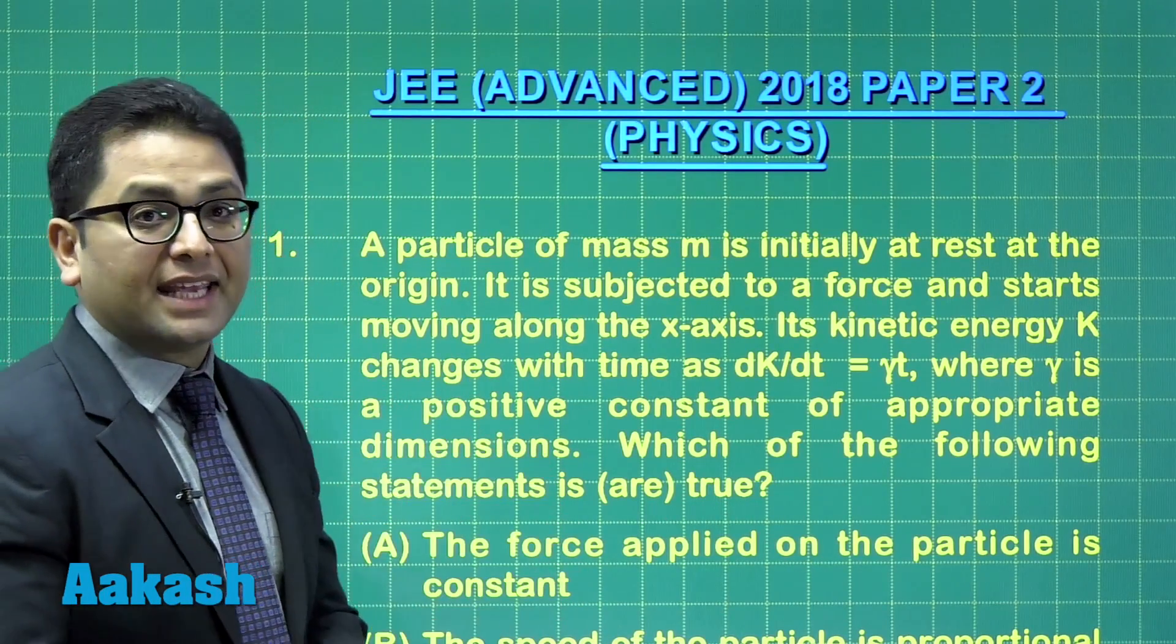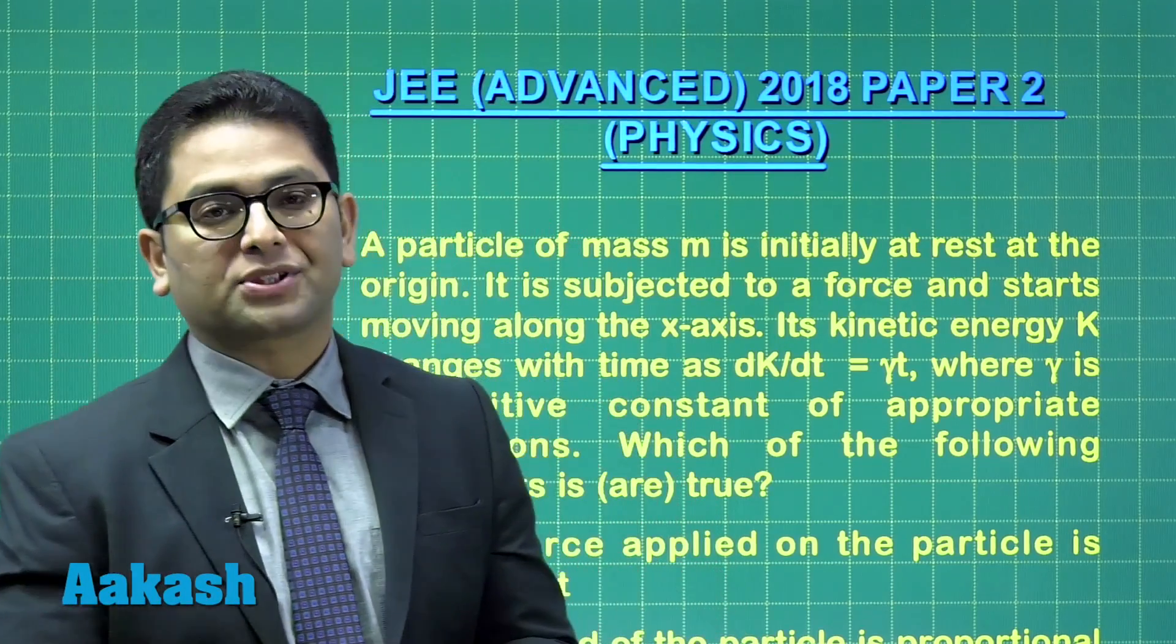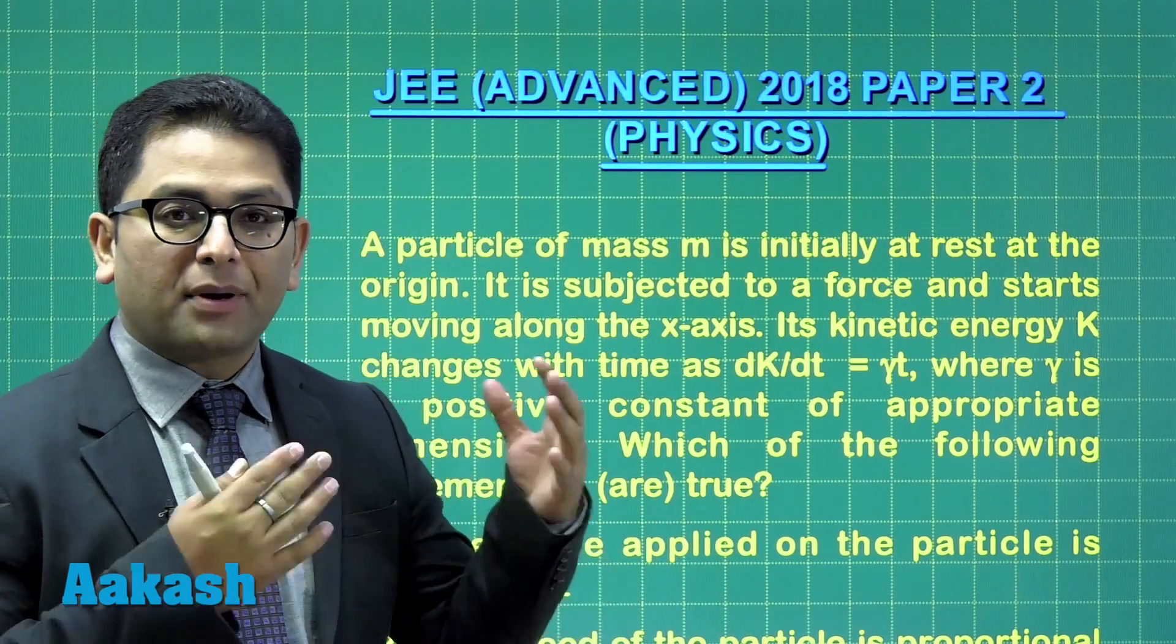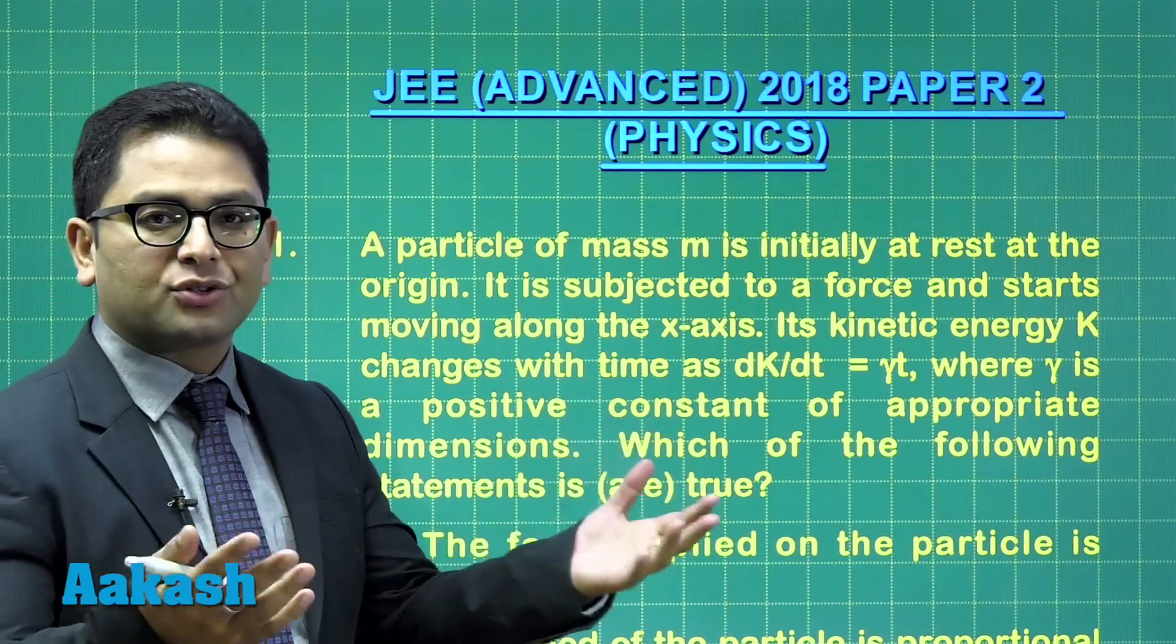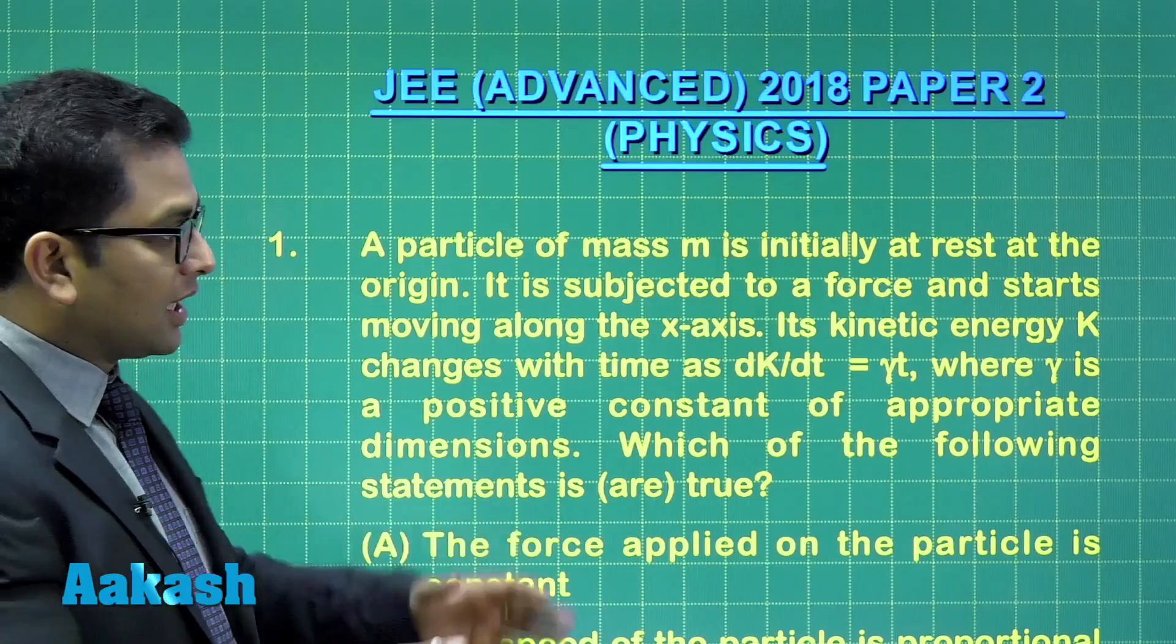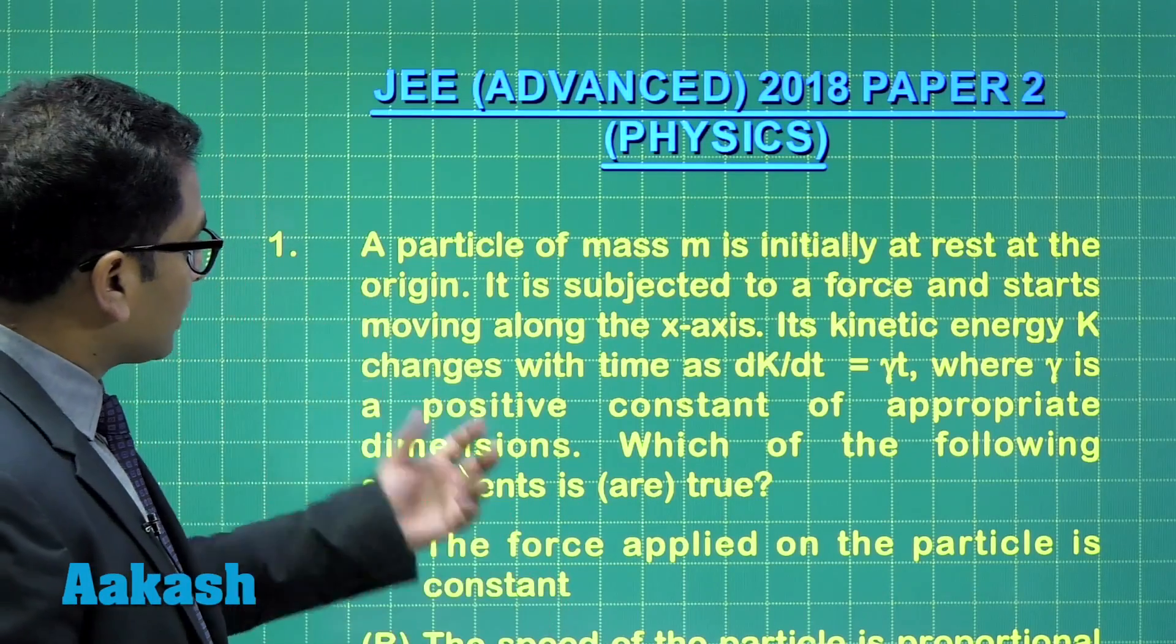In section A, there are six questions with more than one option correct. And there is partial marking as well as negative marking. I would not be going into the marking scheme, rather I will directly concentrate on this question, where there is more than one option correct.